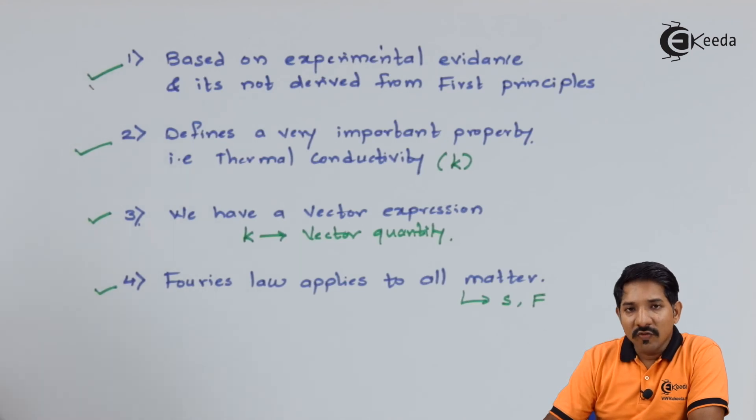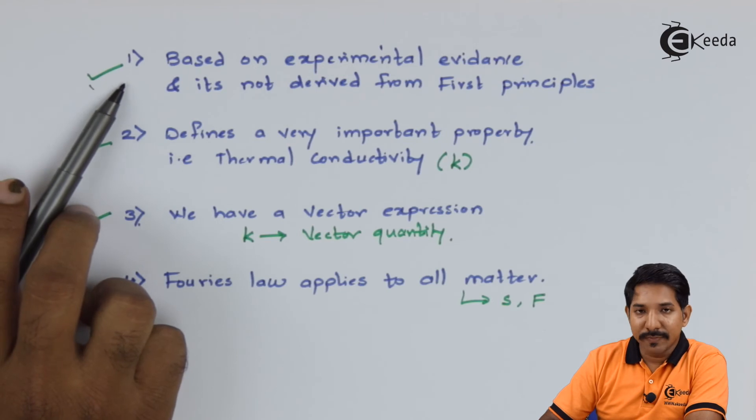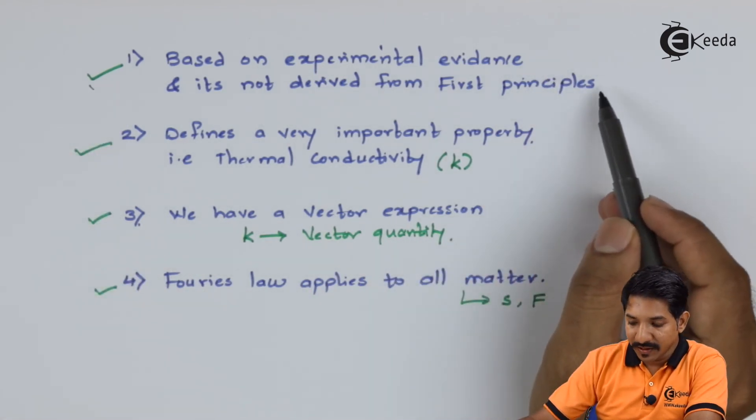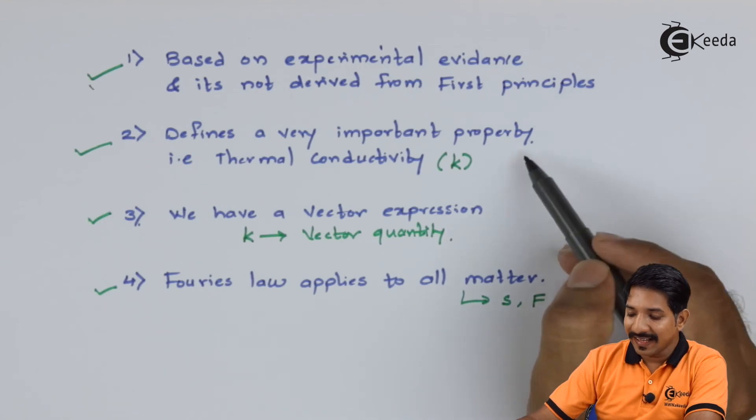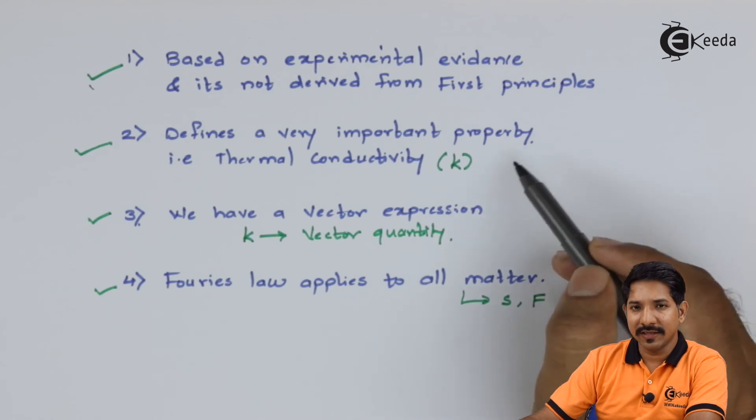So at the end what we can conclude is the Fourier's law is based on experimental evidence, it is not derived from first principle. Second it defines a very important property called thermal conductivity which we are going to discuss later in detail.